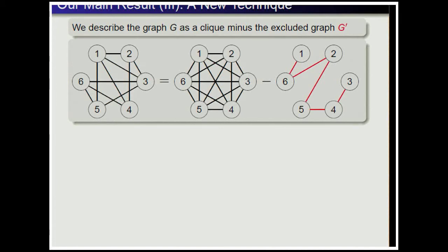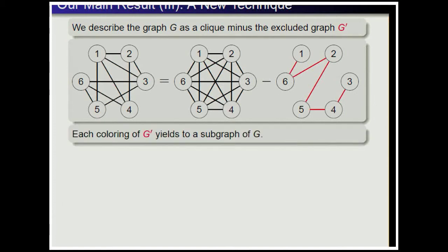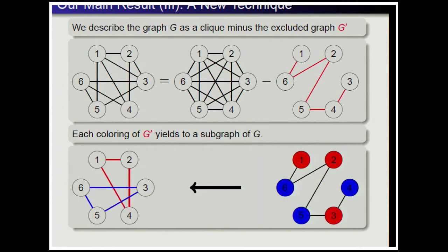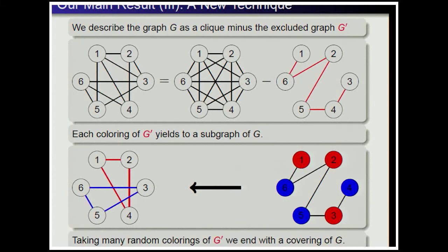We found a new method to obtain small coverings for very dense graphs. We describe G as a clique minus the excluded graph G'. An edge is in G' if and only if it is not in G. Each coloring of G' induces a subgraph of G: if two vertices have the same color, there is no edge between them in G', meaning there is an edge between them in G. Therefore every clique among vertices of the same color is a subgraph of G. Taking many random colorings of G' yields a covering of G.